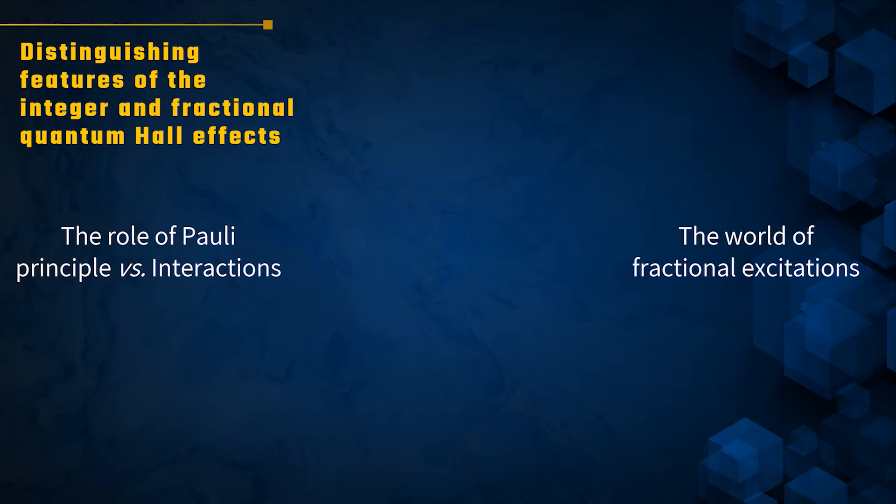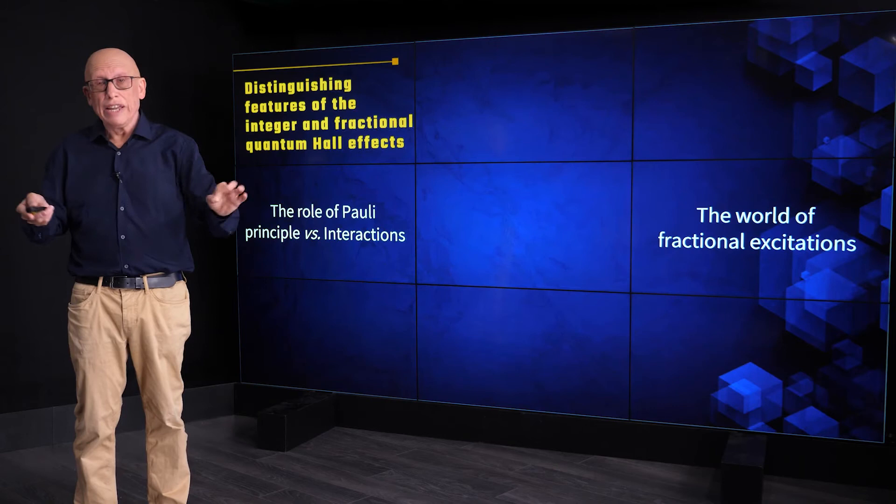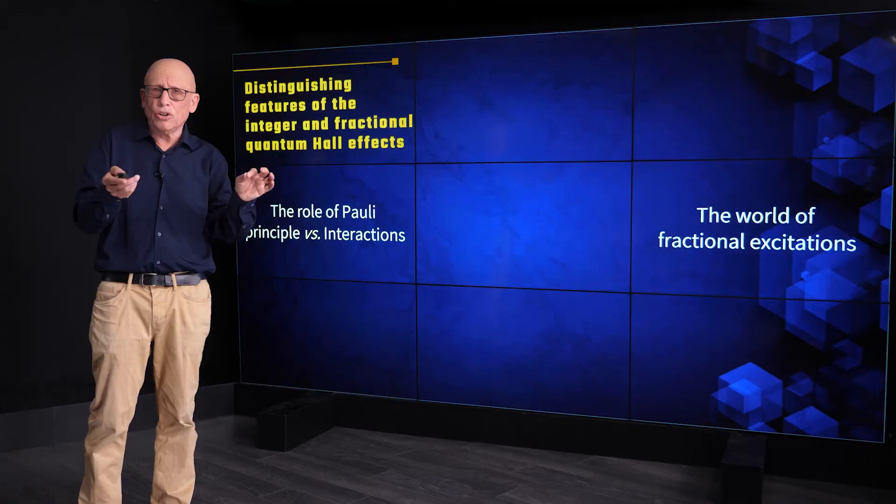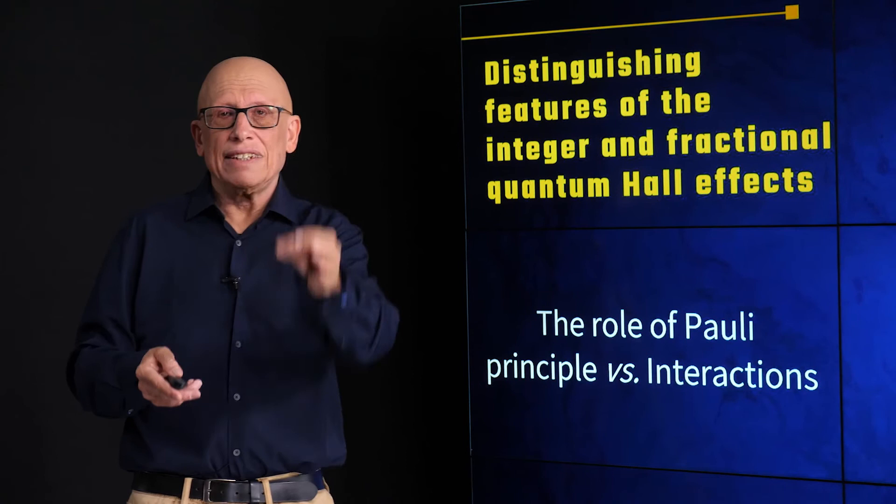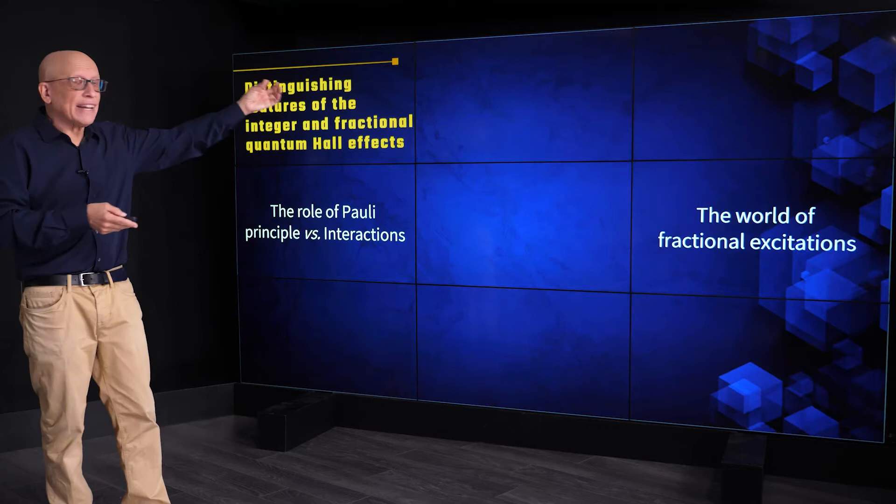So those are two features which are common to the integer and fractional quantum Hall effect. Now let's talk about features which are different. And there are two I'd like to mention. First is what gives rise to the effects. The integer basically needs the Pauli principle, or the Fermi statistics, needs the fact that electrons are fermions in order to exist. It can exist both when the electrons interact or do not interact. The fractional quantum Hall effect needs electron-electron interaction in order to manifest itself, in order for fractional quantum Hall states to be created. That's one difference.